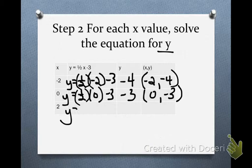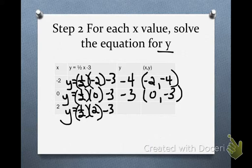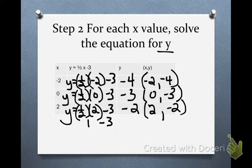My last one, y equals 1 half of 2 minus 3. 1 half of 2 is 1. 1 minus 3 gives me negative 2. So I have 2 and negative 2. So those are the numbers that I want to plot. So I'm going to go to the next step.